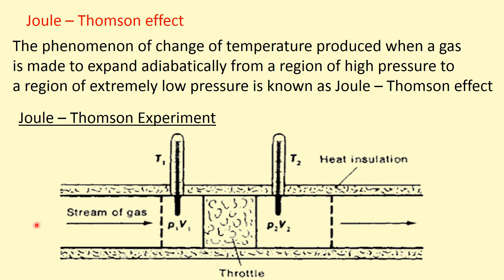Now let's see the Joule-Thomson experiment. In this experiment, a hard glass tube is taken which is divided into two chambers by a porous plug. At the left-hand side chamber the pressure is P1, and the right-hand side chamber pressure is P2, where P1 is greater than P2, and the entire system is kept insulated. When the gas is compressed by pushing the piston — meaning the gas is compressed by volume V1 — it slowly passes through the porous plug and undergoes expansion by volume V2, and a change in temperature is observed.